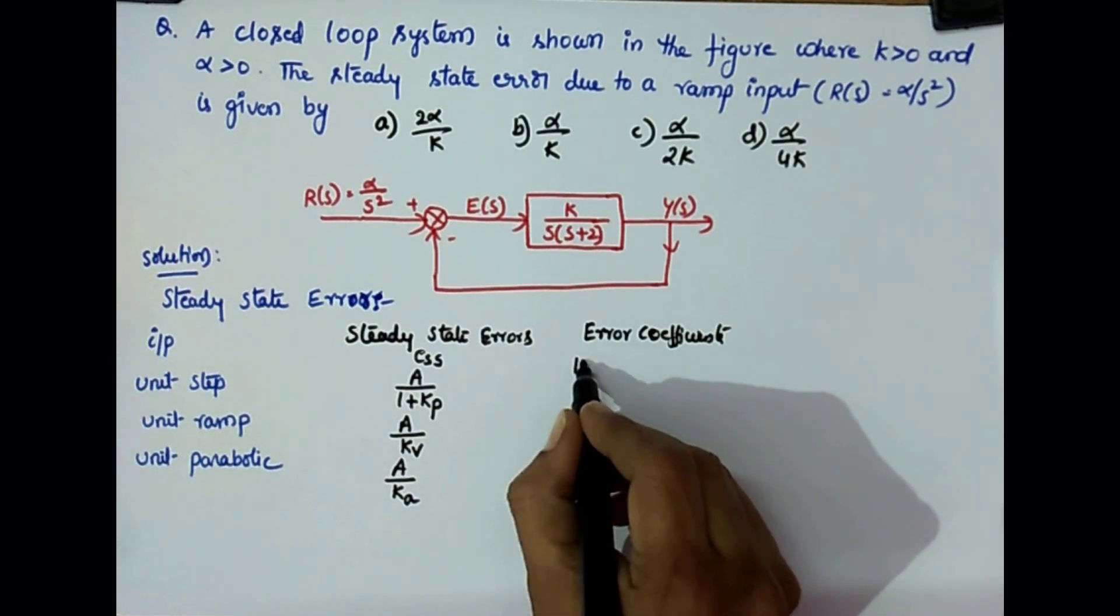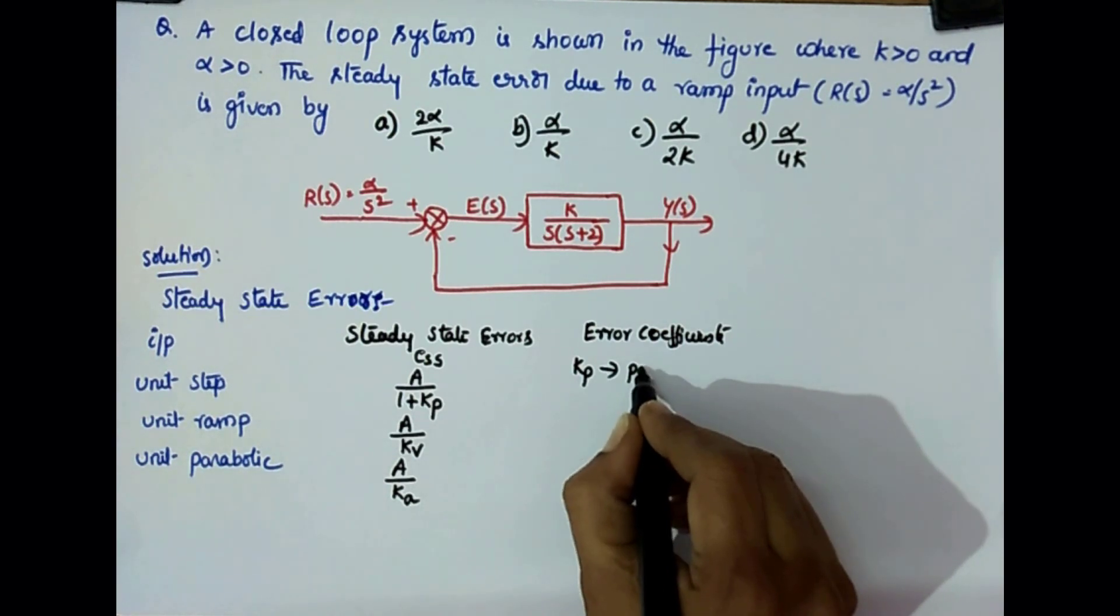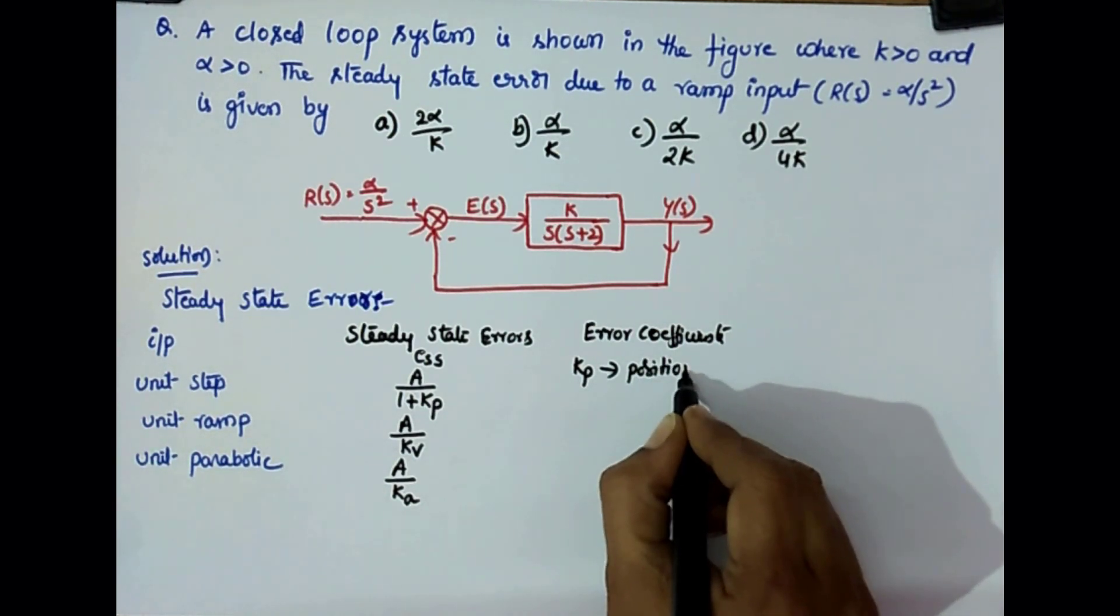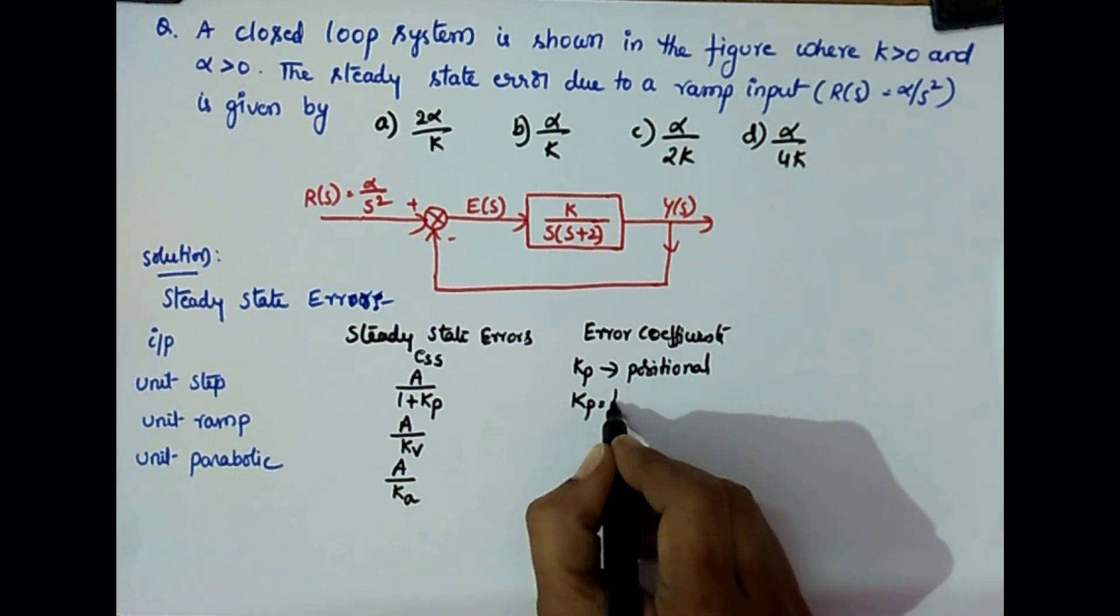The error coefficients: Kp is the positional error coefficient. And Kp formula is limit.